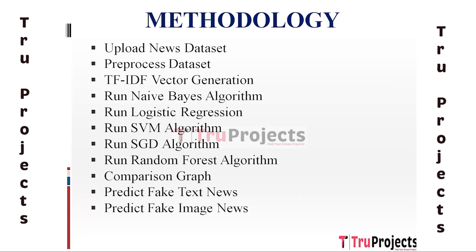The fourth module is Run Naive Bayes Algorithm. Naive Bayes is a probabilistic machine learning algorithm used for classification tasks. The pre-processed and TF-IDF transformed news dataset is fed into the Naive Bayes algorithm for training and prediction. Naive Bayes calculates the probabilities of each class — fake or real — given the input features, and assigns the label with the highest probability to each news article.